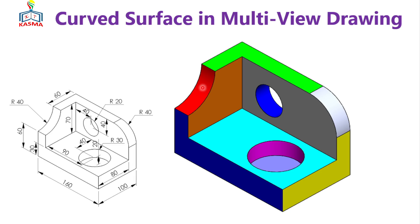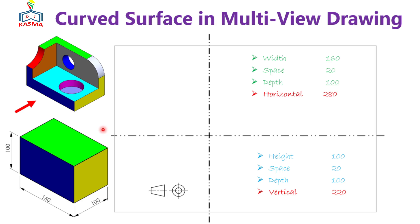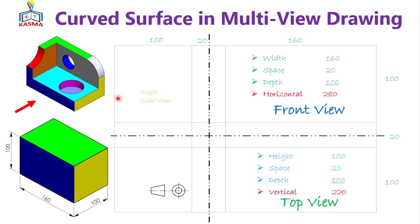The method I used to elaborate the video is by constructing the object step-by-step. Previously the object is just like a prism, and from this prism we'll try to make the final object — creating every feature in this prism. Before doing that, let's construct the multi-view drawings of this prism. The remaining parts will involve removing some portions and constructing new features. Here the first angle projection will be presented, but finally I will also show you the third angle projection system.